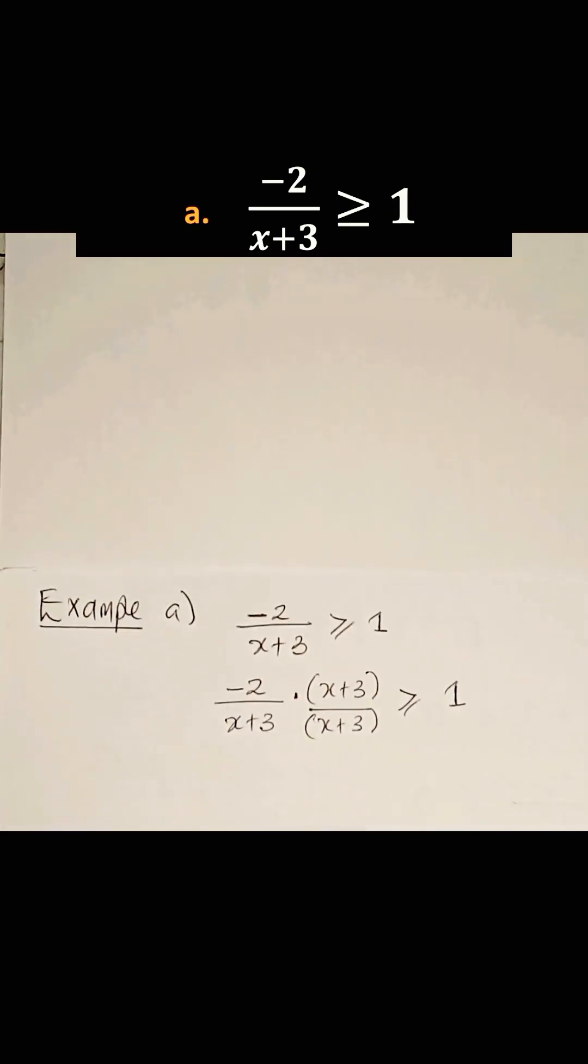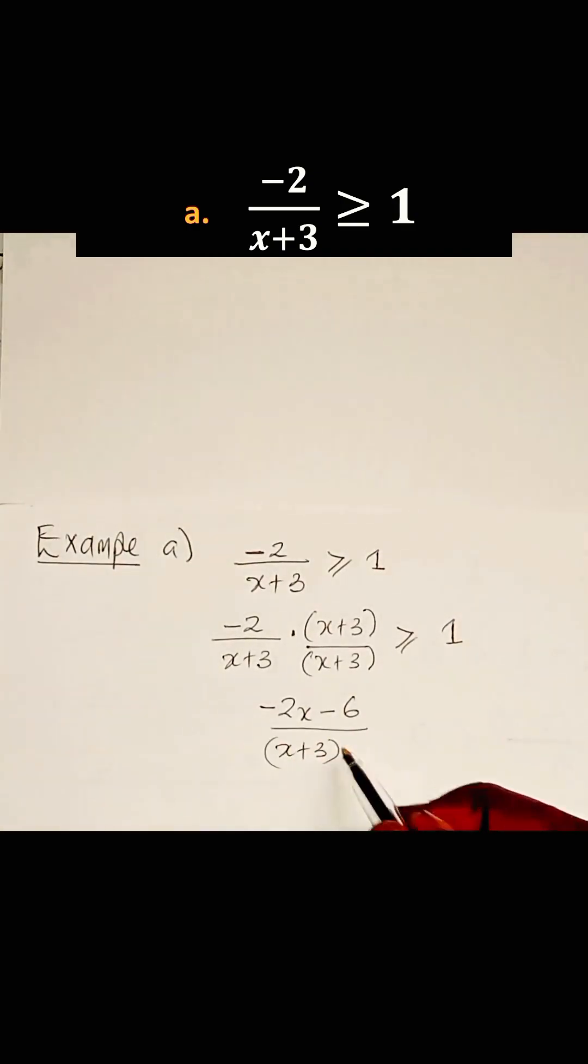Now let's expand. On the numerator, we have -2x - 6. That is divided by (x+3)². That's greater or equal to 1.